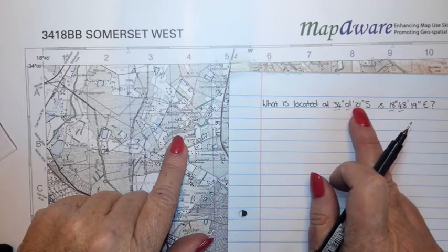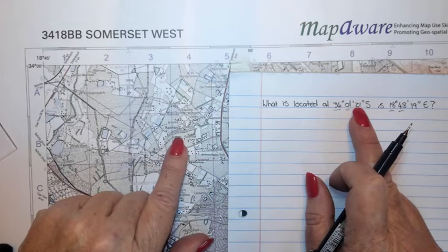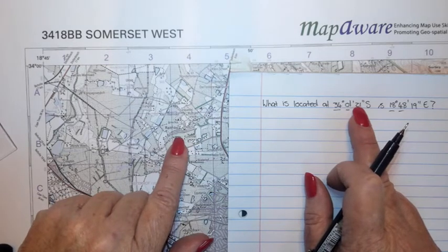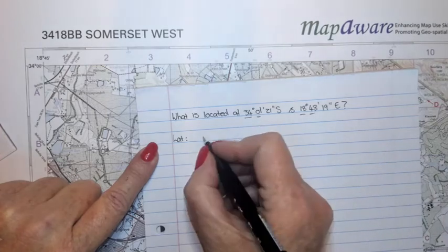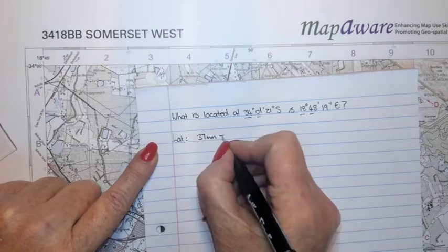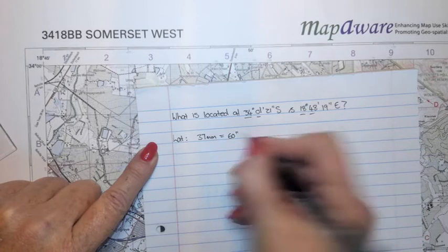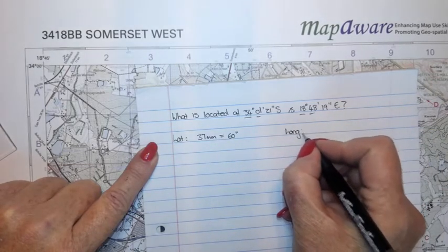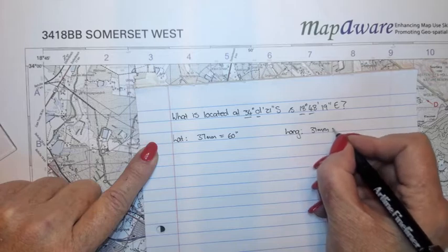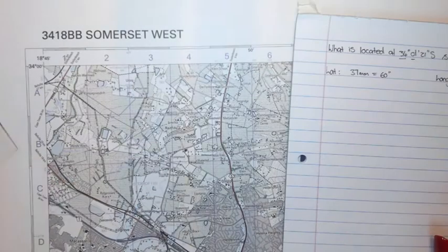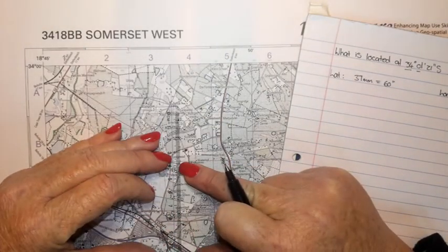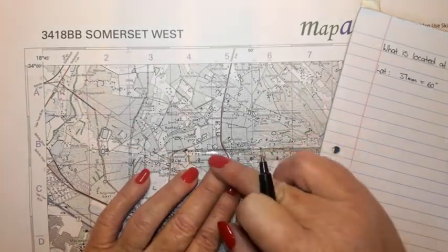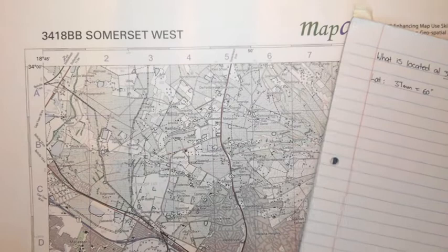What I'm going to show you now is to take the seconds and convert them into a millimeter distance, which we can measure with a ruler on a map. For latitude, as I showed in the previous video, 37 millimeters equals 60 seconds. For longitude, 31 millimeters equals 60 seconds. Just to remind you: the distance between two lines of latitude is always 37 millimeters, and the distance between two lines of longitude is always 31 millimeters.